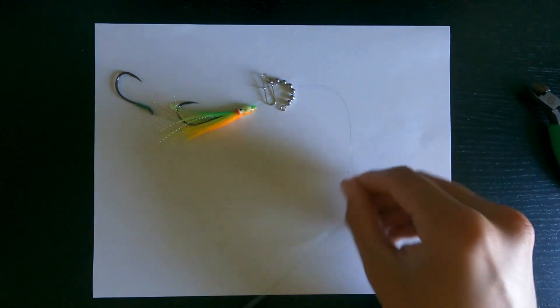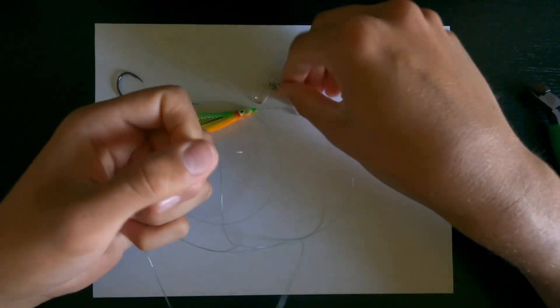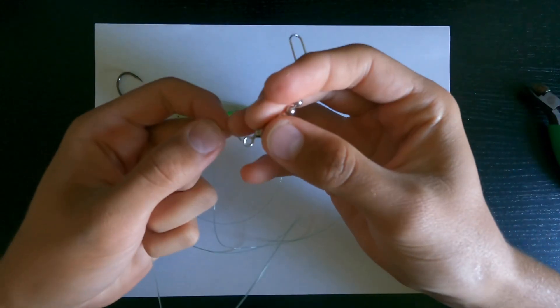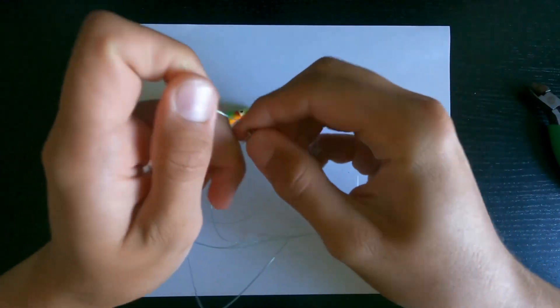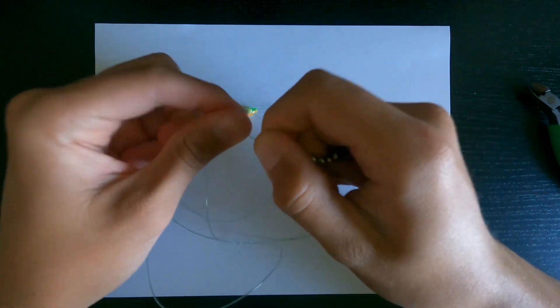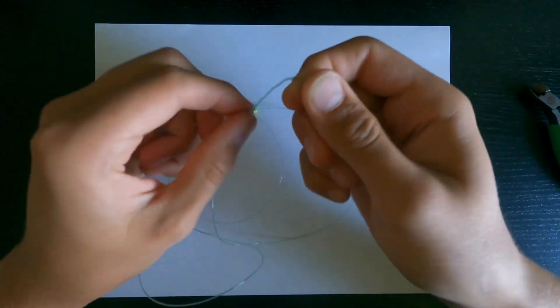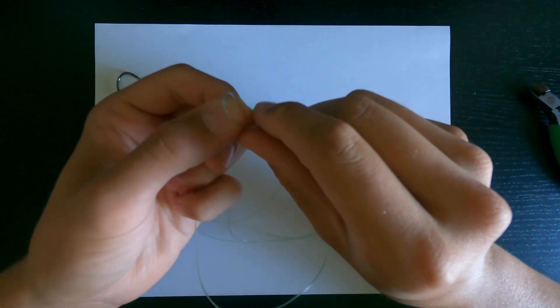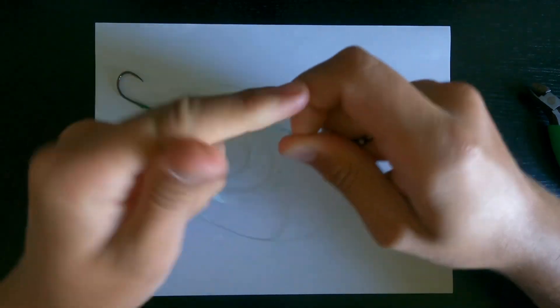And last but not least, I'm going to make sure I tie on this swivel so I don't get twisted up. Just a basic fisherman's knot. I'm going to put that up through the line, pull it tight.